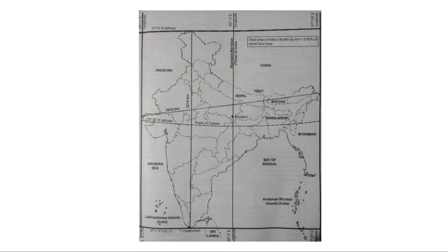The longitude range is 68°7'E to 97°25'E, and the latitude range is 8°4'N to 37°6'N. The distance from Kanyakumari to Kashmir is about 3,214 km, and from Gujarat to Arunachal Pradesh is 2,933 km. The Tropic of Cancer is at 23°30'N latitude. The standard meridian or standard time of India is at 82°30'E longitude, passing through the central part of India.